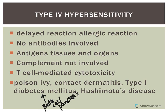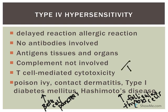Hashimoto's disease is another Type 4 example — it specifically targets the follicular cells in the thyroid gland, destroying it. Other examples include poison ivy and contact dermatitis. With poison ivy, you don't see a reaction right away; it takes time, which is why it's called a delayed reaction. TB tests are also Type 4 hypersensitivity — tuberculin toxin is injected under your skin and you return in a few days to check for a reaction.